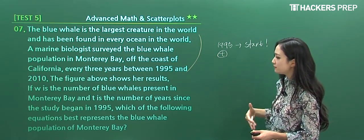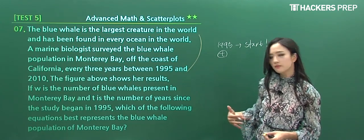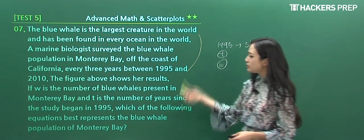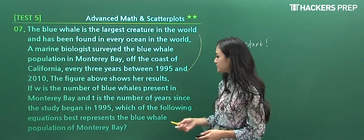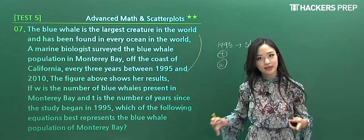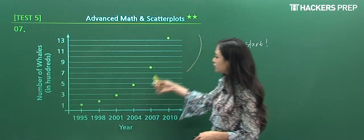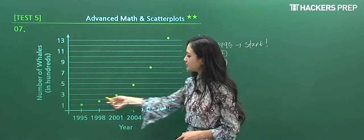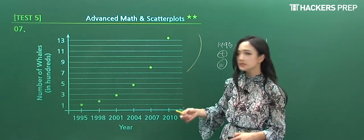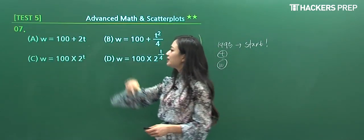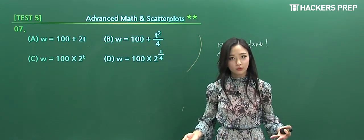Which one of the following equations best represents the blue whale population of the area? All we have to do is find a function that best corresponds to these points—a total of six points. When we skim through the answer choices, I can right away eliminate answer choice A. Why? Because answer choice A is a linear representation.